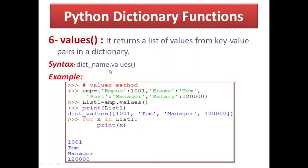The sixth function is values(). Similar to keys(), it returns the list of values from key-value pairs in the dictionary. A list of values is prepared and returned by emp.values(). The list of values can be obtained and individually accessed using a for loop: 'for x in list1' where list1 = emp.values(). Just as you access list elements using a for loop, the same approach is used here for dictionary values.